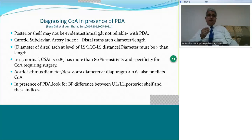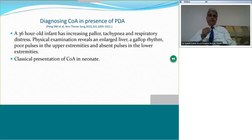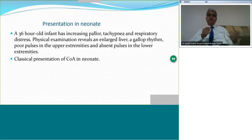Look at this scenario: a 36-hour-old infant with increasing pallor, tachypnea, and respiratory distress. On examination there is an enlarged liver, gallop rhythm, poor pulses in the upper extremities, and absent pulses in the lower extremities. This is the classic presentation of coarctation in the neonate.